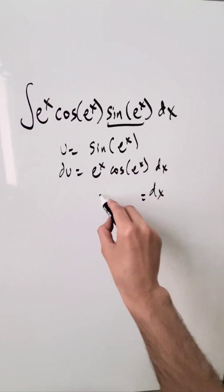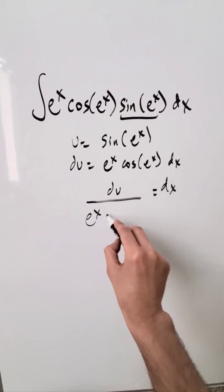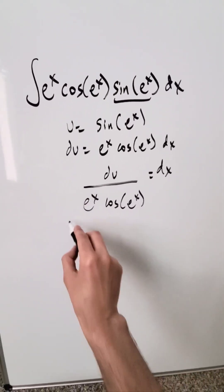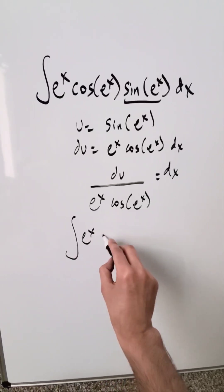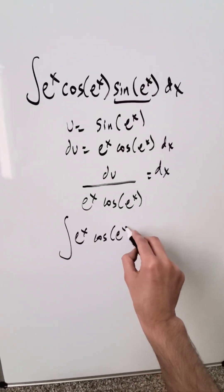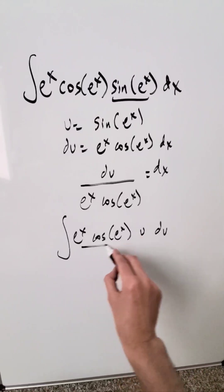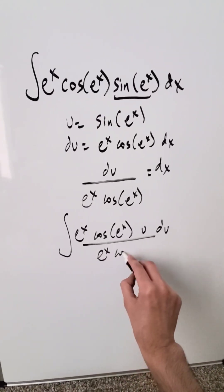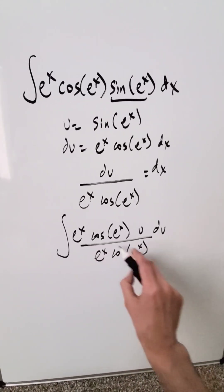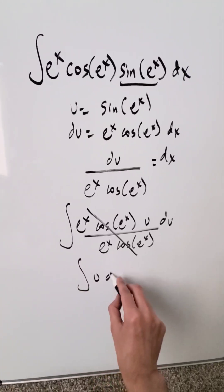Solve for dx: you have du divided by e exponent x cosine of e exponent x. Bringing these items in, you have e exponent x cosine of e exponent x times u, du, divided by e exponent x cosine of e exponent x. These items entirely cancel out, leaving you only u du.